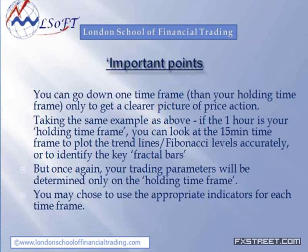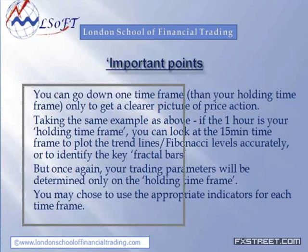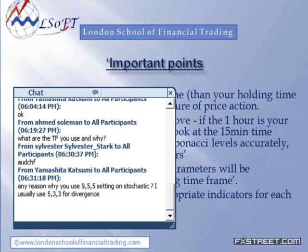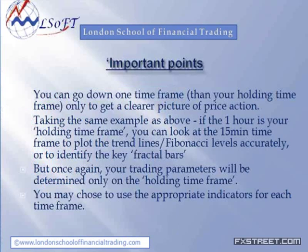Regarding the stochastic settings: the first parameter — whether it's five or nine — doesn't really matter. What matters is the last two parameters: the three and three. If you use a three-three setting, it gives a lot of whipsaws, and they are ideal for larger term time frames because on larger time frames you need to compress the price movement or look for quick reactions. I find the five-five to be ideal for determining divergence, and I use the nine-five-five across all time frames. All of my traders follow the nine-five-five. If you're looking for divergence on the stochastic — not just oversold or overbought — I would recommend using the nine-five-five.